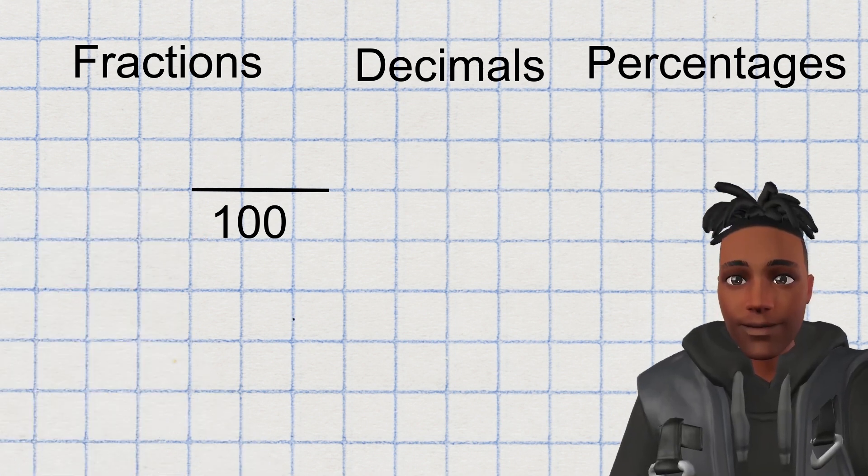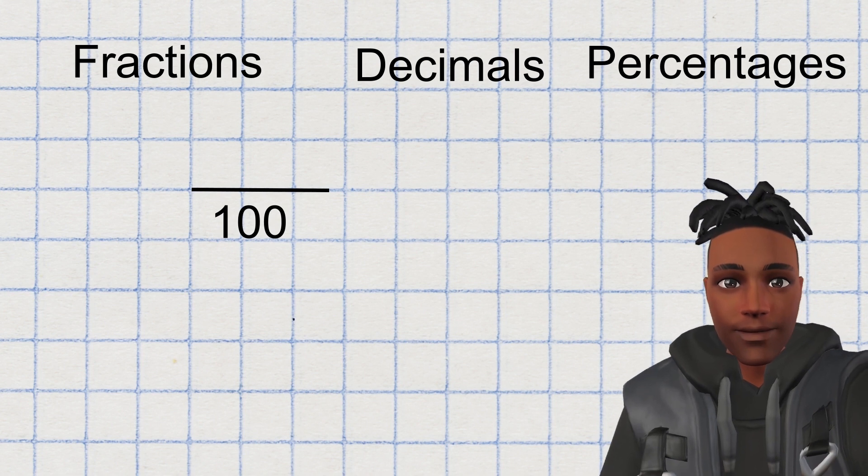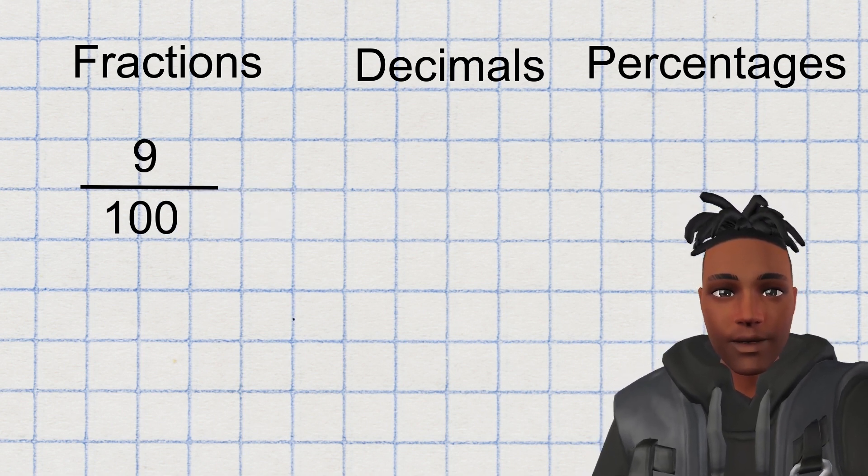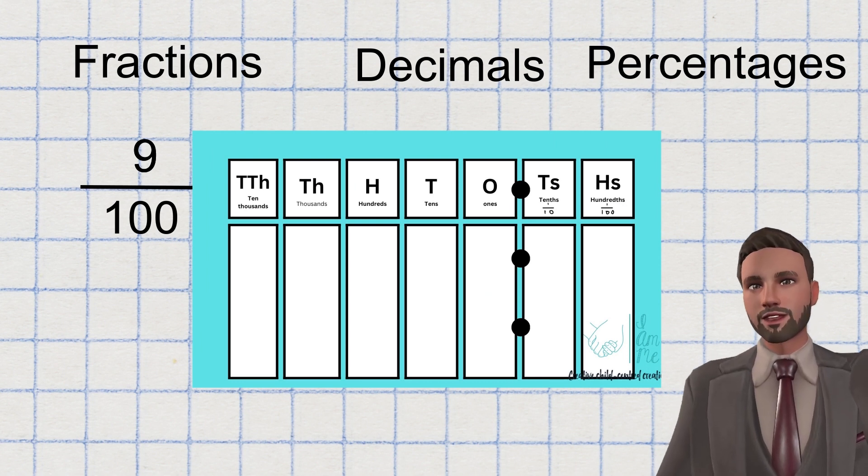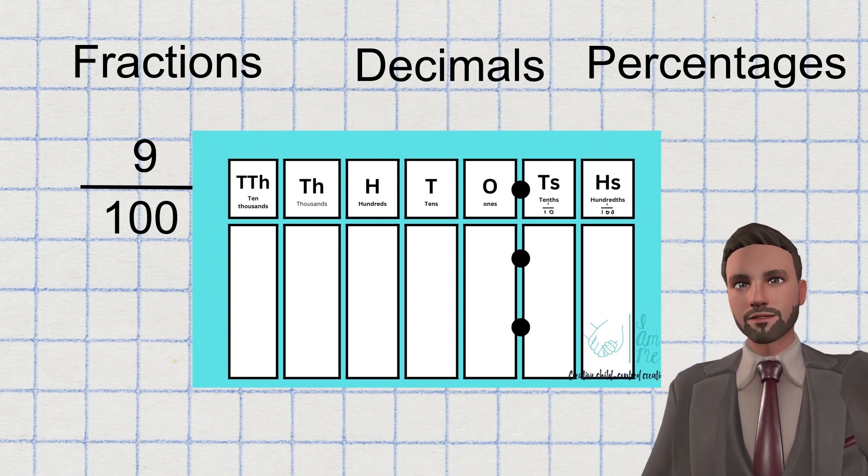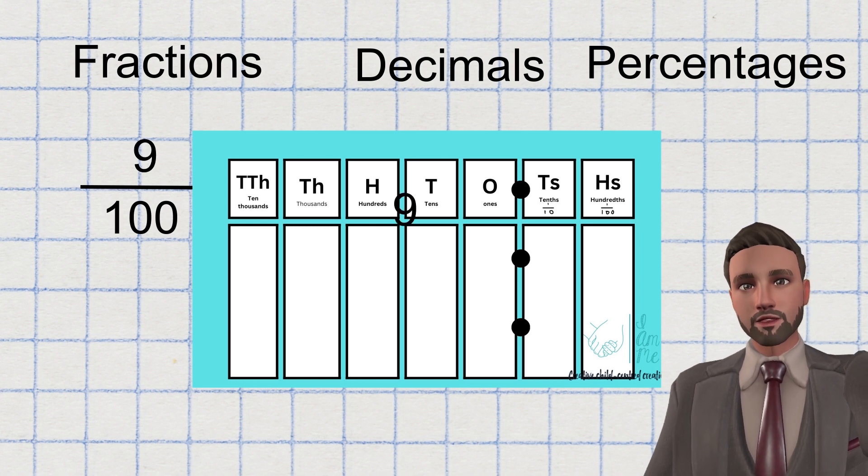Wait. I've got a problem. My question only has one digit in my fraction. How do I write that as a decimal and percentage? If you read the fraction, it kind of tells you. Nine hundredths. The nine goes in the hundredths column.